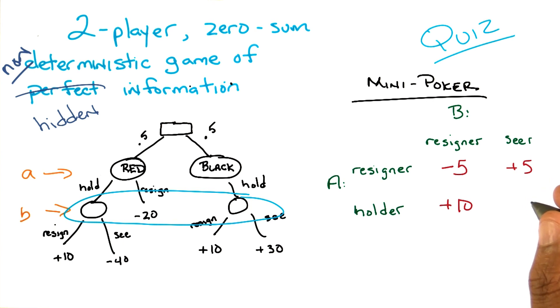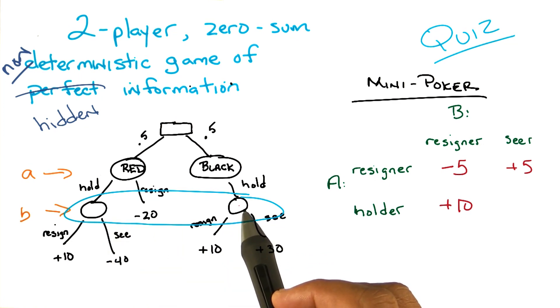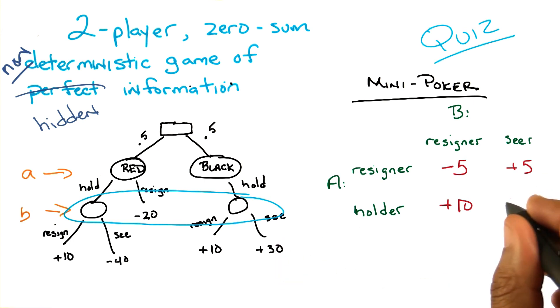Okay, what about holder seer? All right, so that's the case where A holds, so we go down those branches, and we always end up in one of the blue circled states. Yep. And B sees, half the time that leads to minus 40, half the time that leads to plus 30. So that's minus 10 divided by 2, which is minus 5 again? Yeah, that's exactly right. So that's correct, Michael.